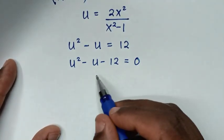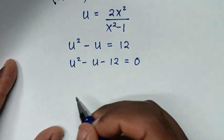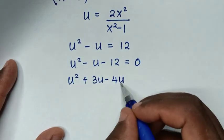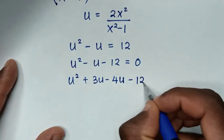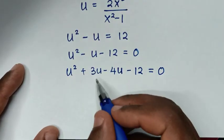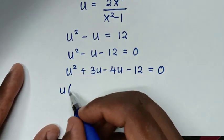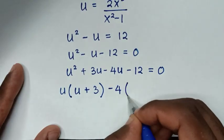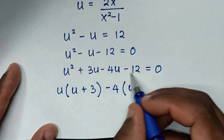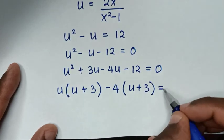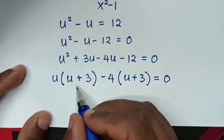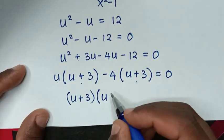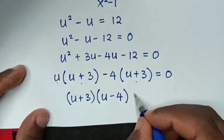We solve the quadratic by grouping and factorization. We split -u as +3u - 4u: u² + 3u - 4u - 12 = 0. Taking u common from the first pair: u(u + 3), and -4 common from the second pair: -4(u + 3). So we get (u + 3)(u - 4) = 0.